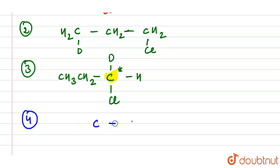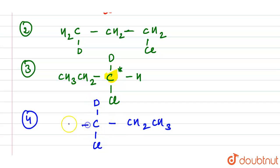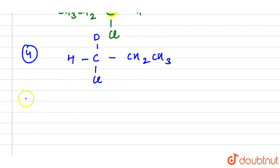For the fourth structure, we draw another arrangement with D and Cl positioned differently on the carbon chain. This gives us our fourth distinct isomer.